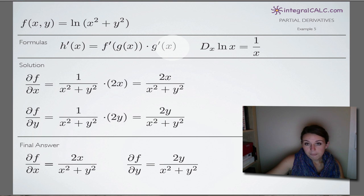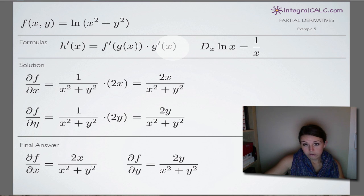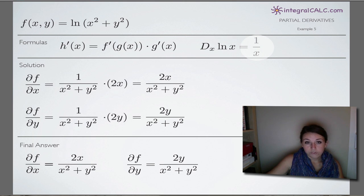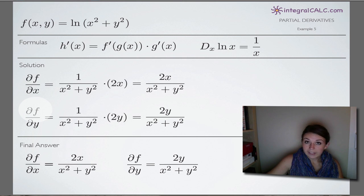On top of that, because we're taking partial derivatives, we're going to need the derivative formula for the natural log function. The derivative of ln(x) equals 1 over x. So to use both of these formulas to take the partial derivatives with respect to both x and y, the first thing we're going to do is apply chain rule.